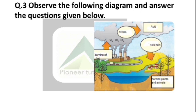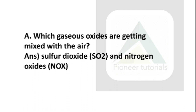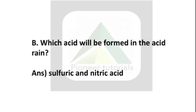Question number 3: Observe the following diagram and answer the questions given below. The diagram shows burning of fuels, oxides are formed, acids are formed, and there is harm to plants and animals. Question 3A: Which gaseous oxides are getting mixed with the air? The answer is sulfur dioxide and nitrogen oxide. Question 3B: Which acid will be formed in the acid rain? That is sulfuric acid and nitric acid.